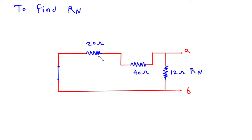Now as we can see that this 20 Ohm is in series with 40 Ohm. So RN is equal to 20 Ohm in series with 40 Ohm. So this is 60 and it is in parallel with 12 Ohm. So this will be 60 Ohm parallel with 12 Ohm.